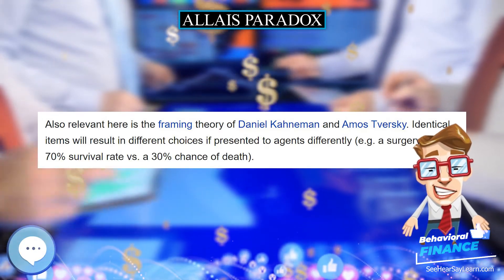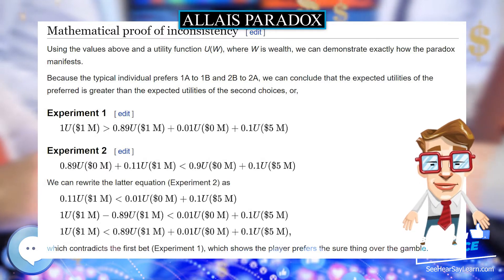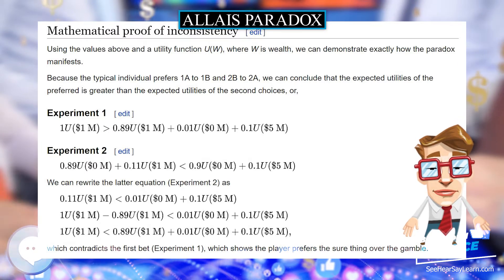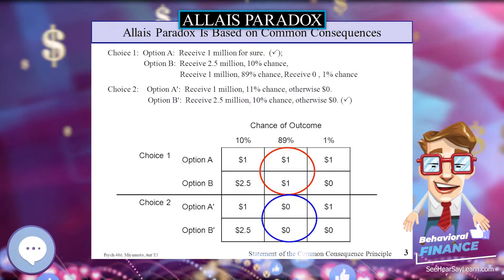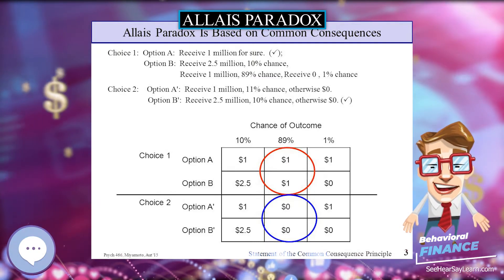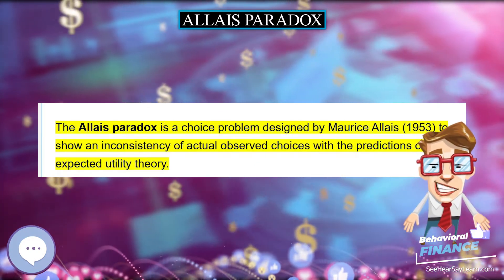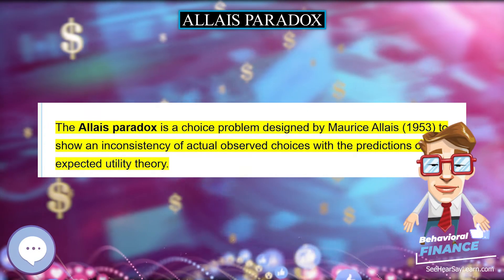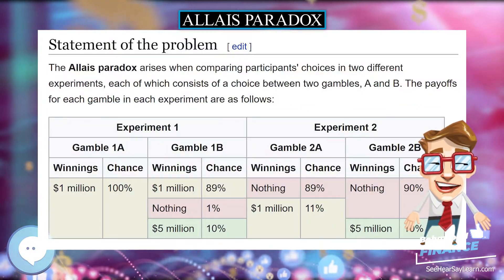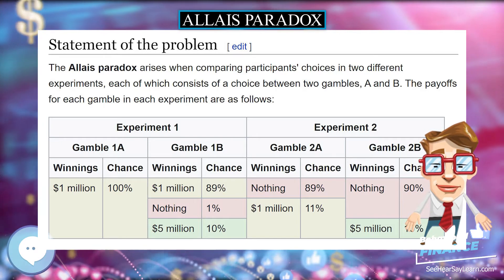Allais further asserted that it was reasonable to choose 1A alone or 2B alone. However, that the same person who chose 1A alone or 2B alone would choose both 1A and 2B together is inconsistent with expected utility theory. According to expected utility theory, the person should choose either 1A and 2A, or 1B and 2B.